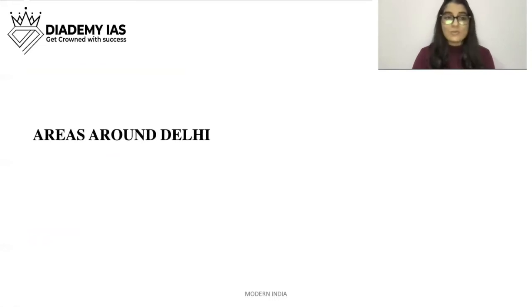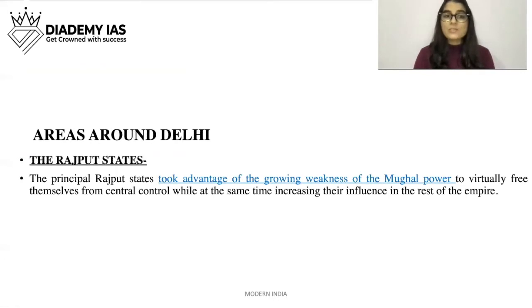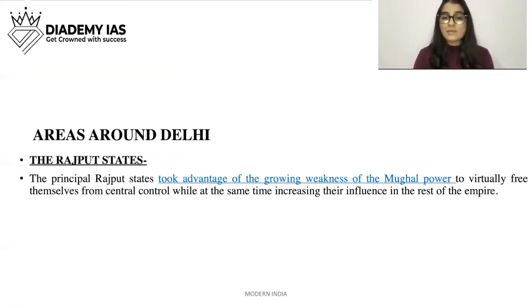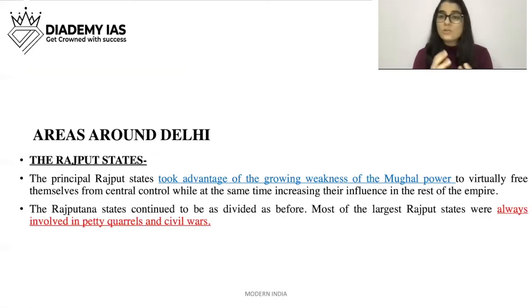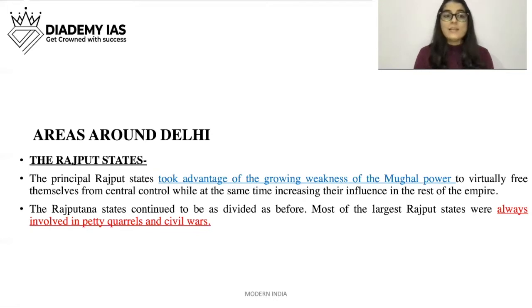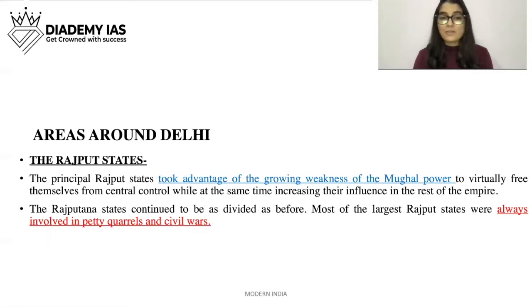Next are the areas around Delhi. First, the Rajput states. The principal Rajput states took advantage of the growing weakness of Mughal power to virtually free themselves from central control, while at the same time increasing their influence in the rest of the empire. However, the Rajputana states continued to be divided — most of the largest Rajput states were always involved in petty quarrels and civil wars.